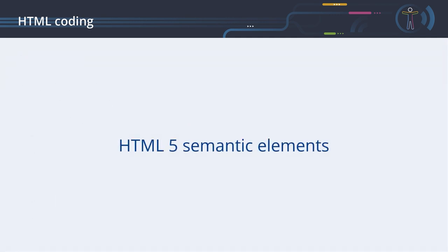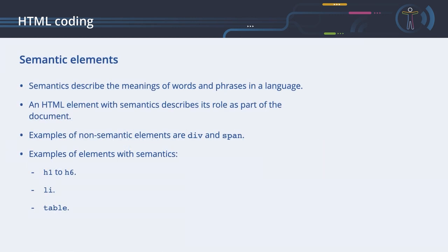HTML5 Semantic Elements. Semantics describe the meanings of words and phrases in a language. An HTML element with semantics describes its role as part of the document. Examples of non-semantic elements are the div and span elements. These elements group content together without any meaning, and their visual appearance can only change with an additional style sheet rule. Examples of HTML elements with semantics are the heading elements h1 to h6, the list element, and the table element. These elements result in specific types of rendering without any additional style sheet rules.